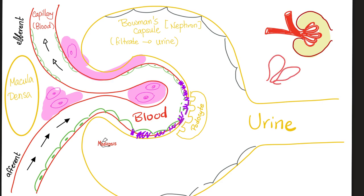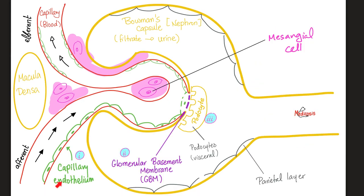The glomerulus will start looking thick, inflamed, with tons of deposition, and will appear curly. We call this wire looping — subendothelial deposits of immune complexes producing this characteristic wire loop appearance.